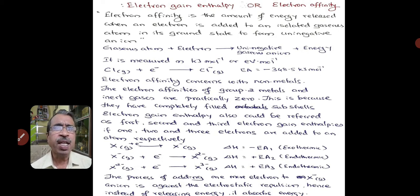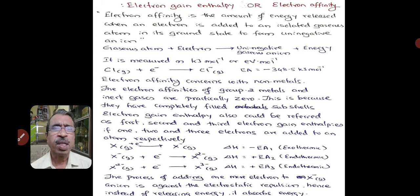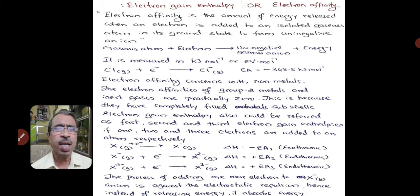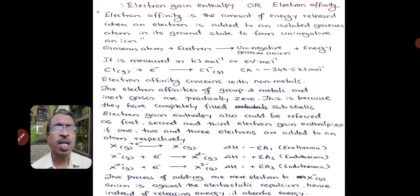Electron affinity is the amount of energy released when an electron is added to an isolated gaseous atom in its ground state to form a uninegative anion. When an electron is added to a gaseous atom, we get a uninegative gaseous ion and energy is given out. This energy is called electron gain enthalpy. It is just like the opposite of ionization enthalpy.